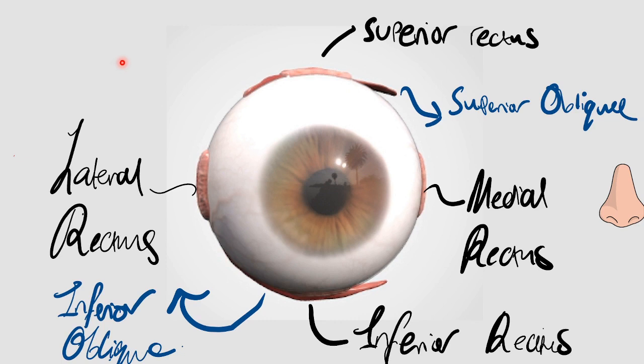These muscles have different innervation. You can remember them with a little handy mnemonic called LR6 SO4 3. LR6 means your lateral rectus is innervated by nerve 6, which is your abducens nerve - that's your cranial nerve 6.